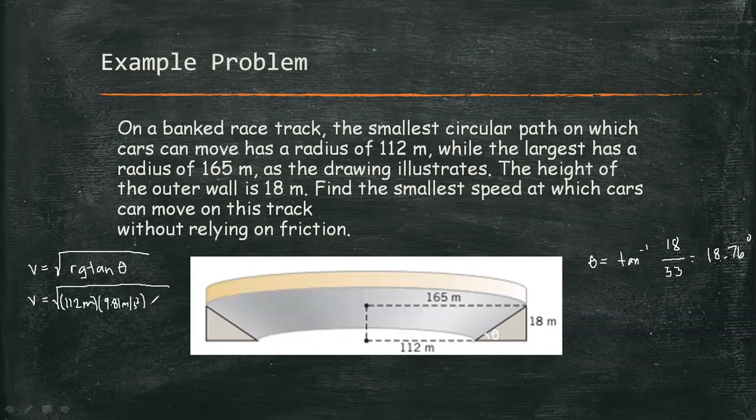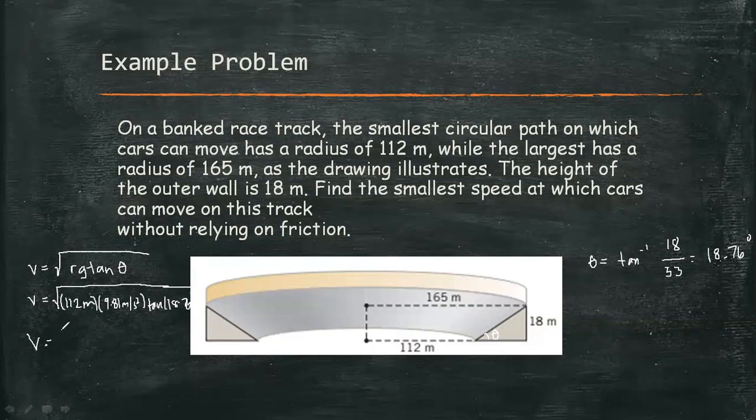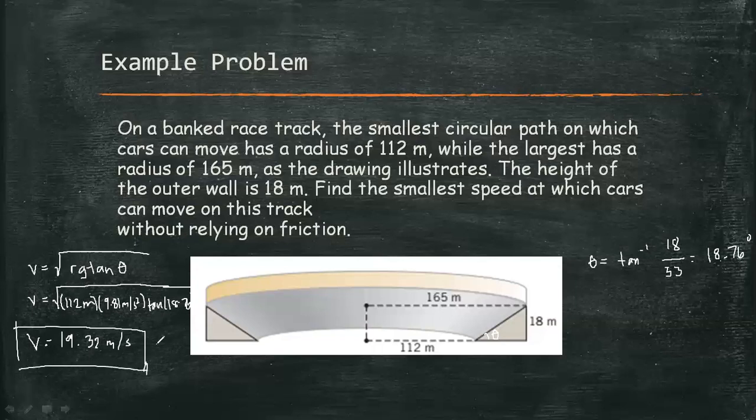Therefore our velocity is equal to square root of 112 meters times gravitational pull of 9.81 meters per second squared times tangent 18.76 degrees. Therefore our velocity or speed, or the magnitude of the velocity rather, is equal to 19.32 meters per second.